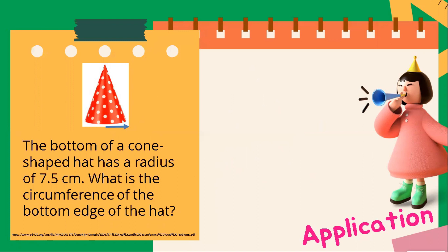Let's now have our formula for this. Circumference of the circle is equal to 2 times pi times radius, since the diameter is not provided. Let's substitute 2 times 3.14, which is the value of the pi, times 7.5 centimeters, which is the radius of the cone-shaped hat.